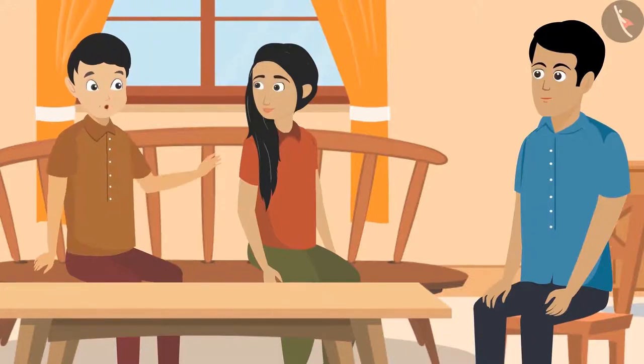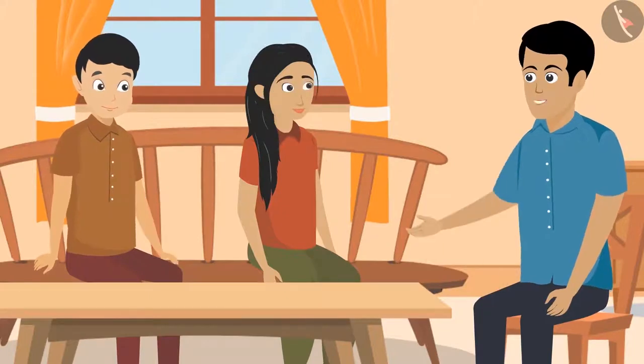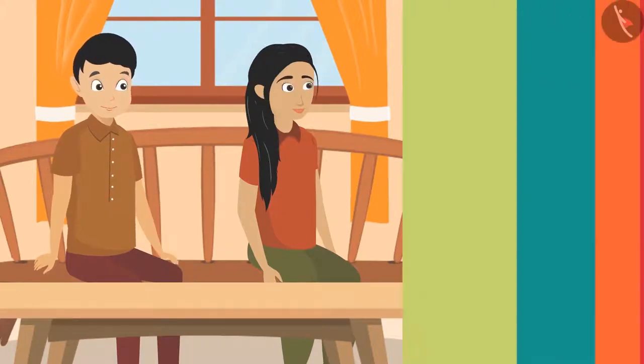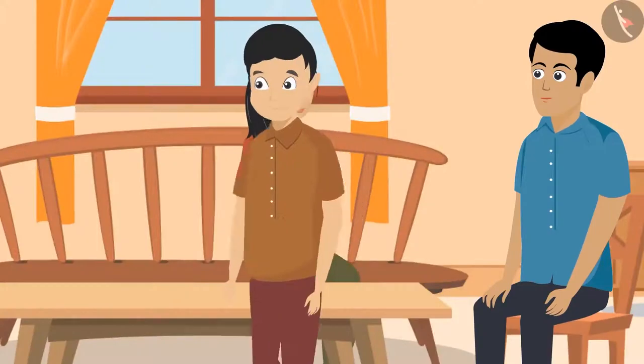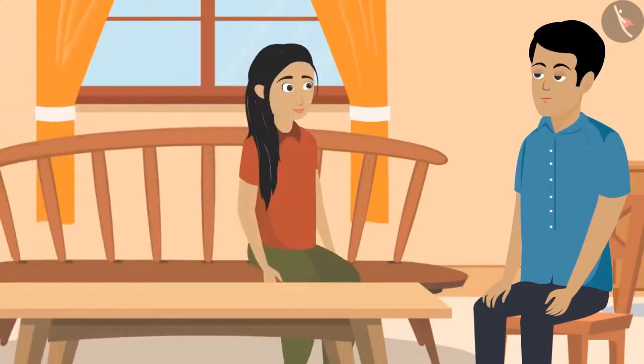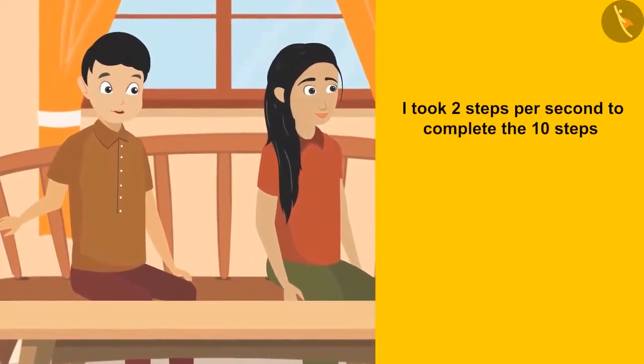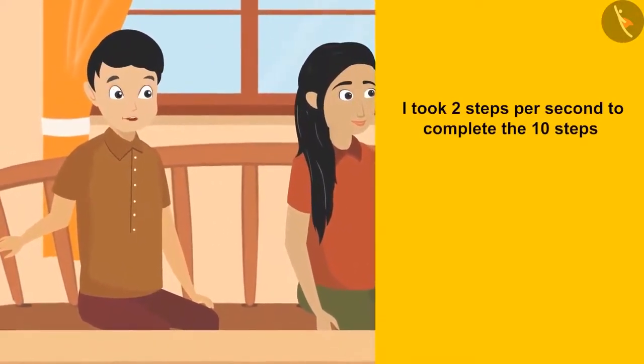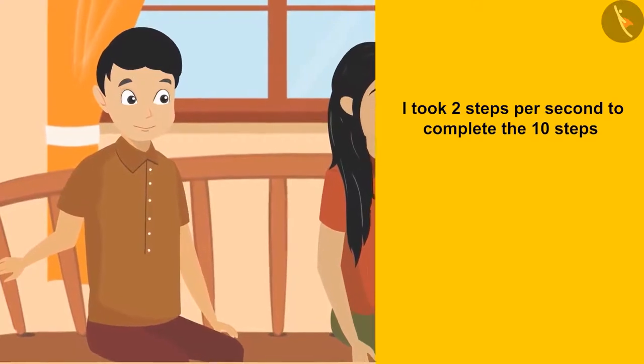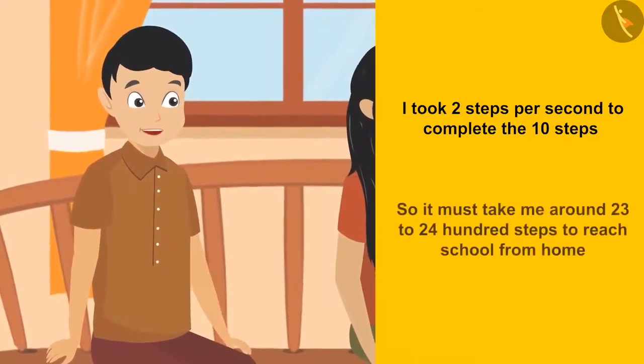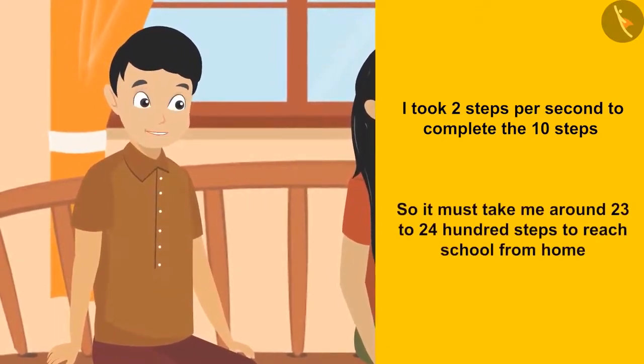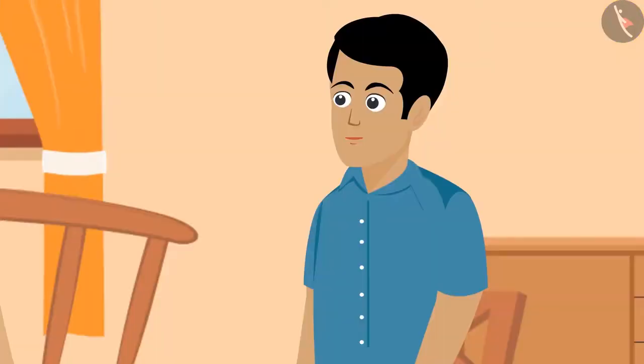Pawan doesn't know initially. He walks in the courtyard for some time. Then realizes it took 10 steps to walk from one corner to another at around 2 steps per second. So according to this calculation, it must take around 2300 to 2400 steps to reach school from home.